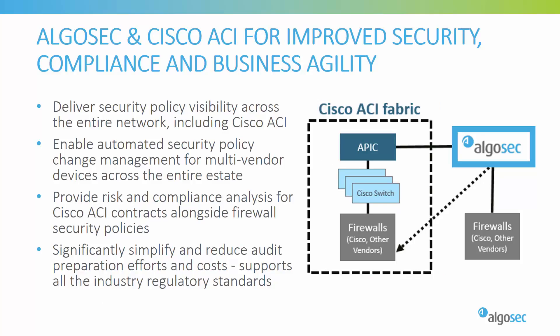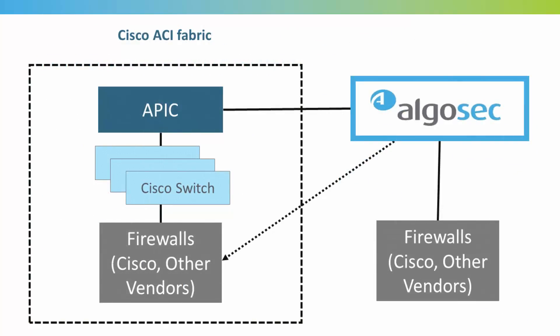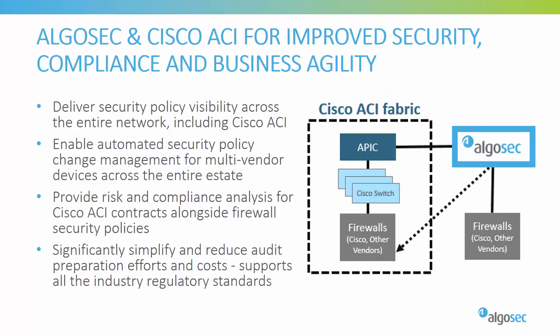AlgoSec seamlessly integrates with Cisco ACI to enhance security policy visibility and deliver change, risk, and compliance management for next-generation data centers. AlgoSec incorporates the Cisco APIC configurations with the underlying firewall configurations of Cisco's as well as other vendors' security devices, both inside the ACI fabric and outside, to provide full end-to-end security visibility. In addition, AlgoSec greatly enhances Cisco ACI's automation capabilities, and extends policy change automation to all other firewalls and routers, both inside and outside the data center.